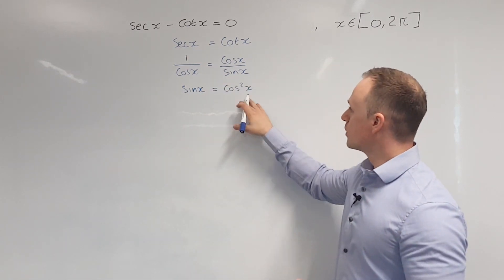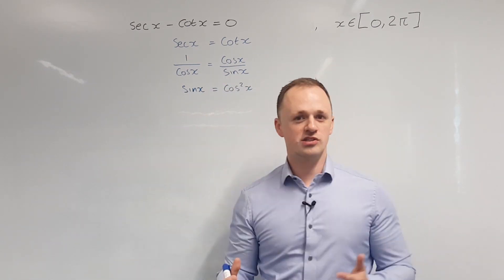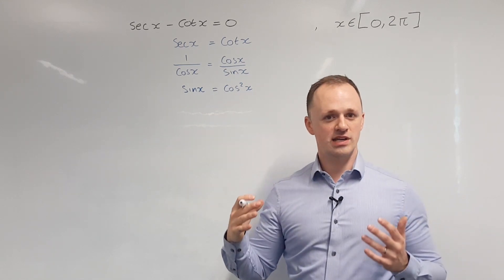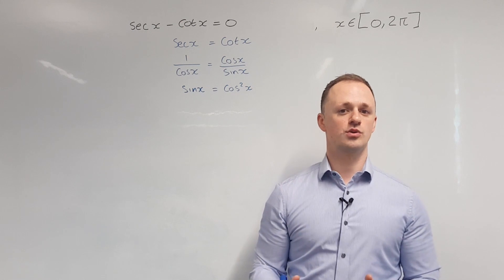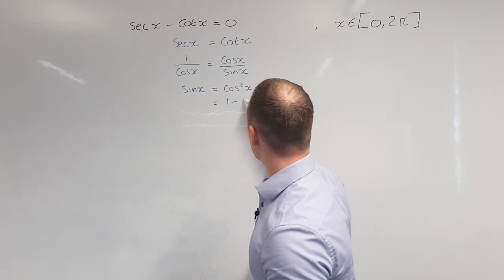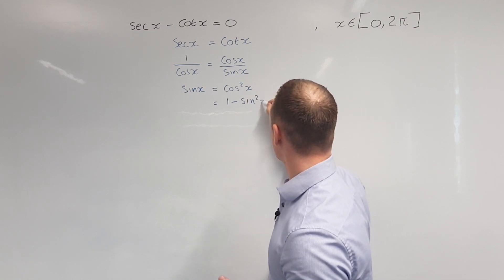From here, we want to get this equation in terms of either sine or cos. As we've got cos squared, it makes sense to use the identity cos squared plus sine squared equals 1. So we're going to write cos squared as 1 minus sine squared x.